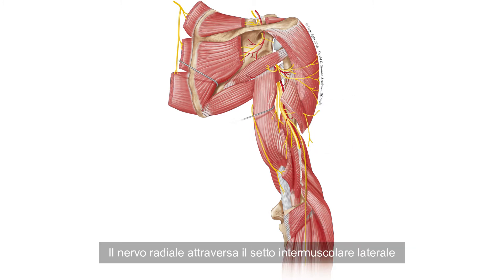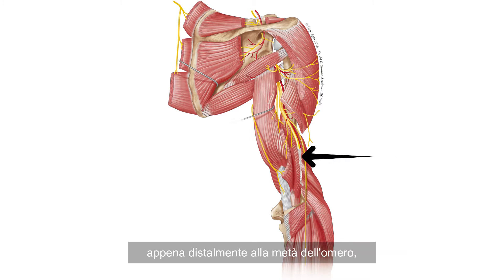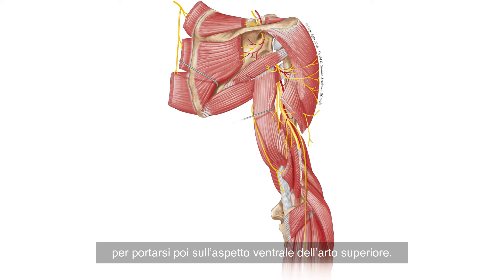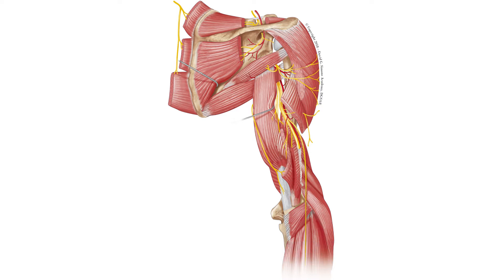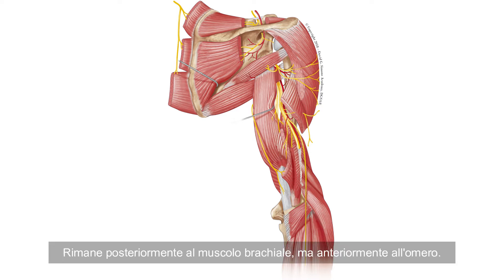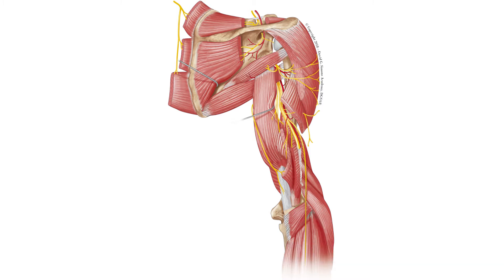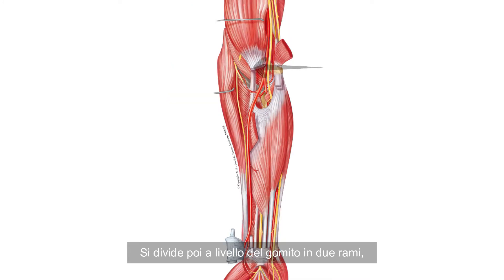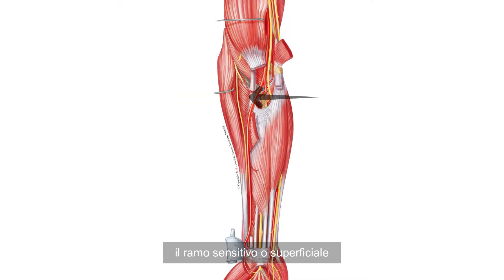The radial nerve crosses the lateral intermuscular septum just distally of the middle of the humerus to pass to the anterior side of the upper arm. It remains posterior to the brachialis muscle but anterior to the humerus. It divides at the level of the elbow into two branches: the sensory or superficial branch, and the motor or deep branch.